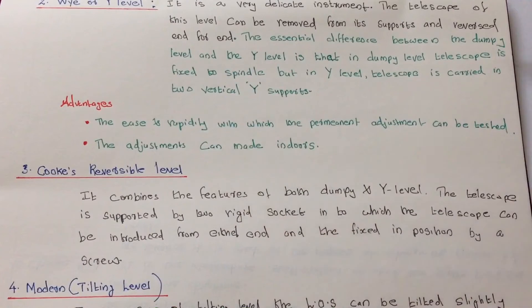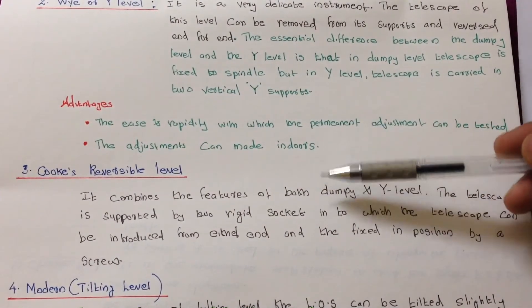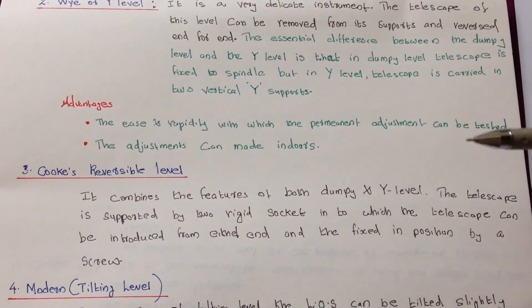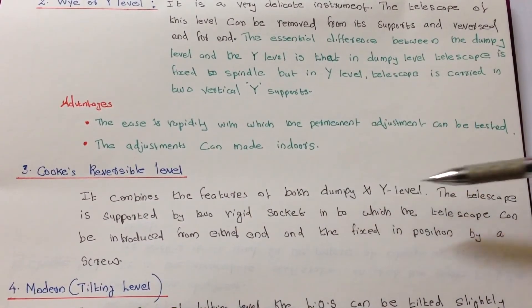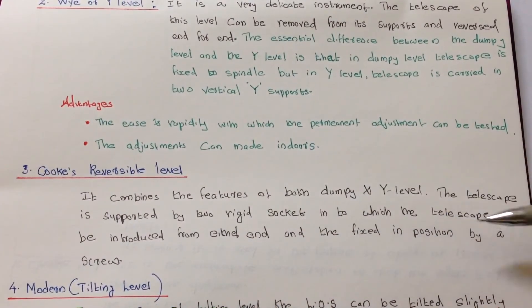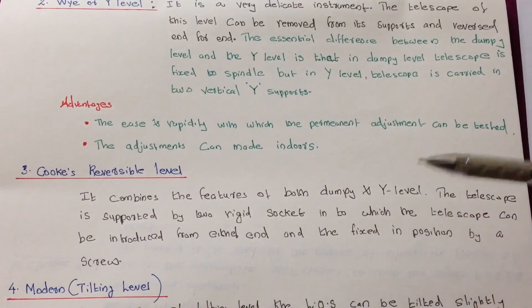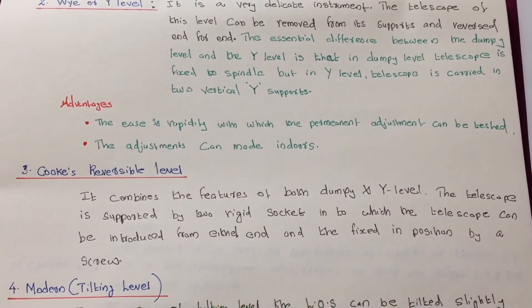Cook's reversible level combines the features of both dumpy and Y level. The telescope is supported by a rigid socket into which the telescope can be introduced from either end and fixed in position by a screw. So it compares the features of both dumpy and Y level. We can just say that the features will be the same.